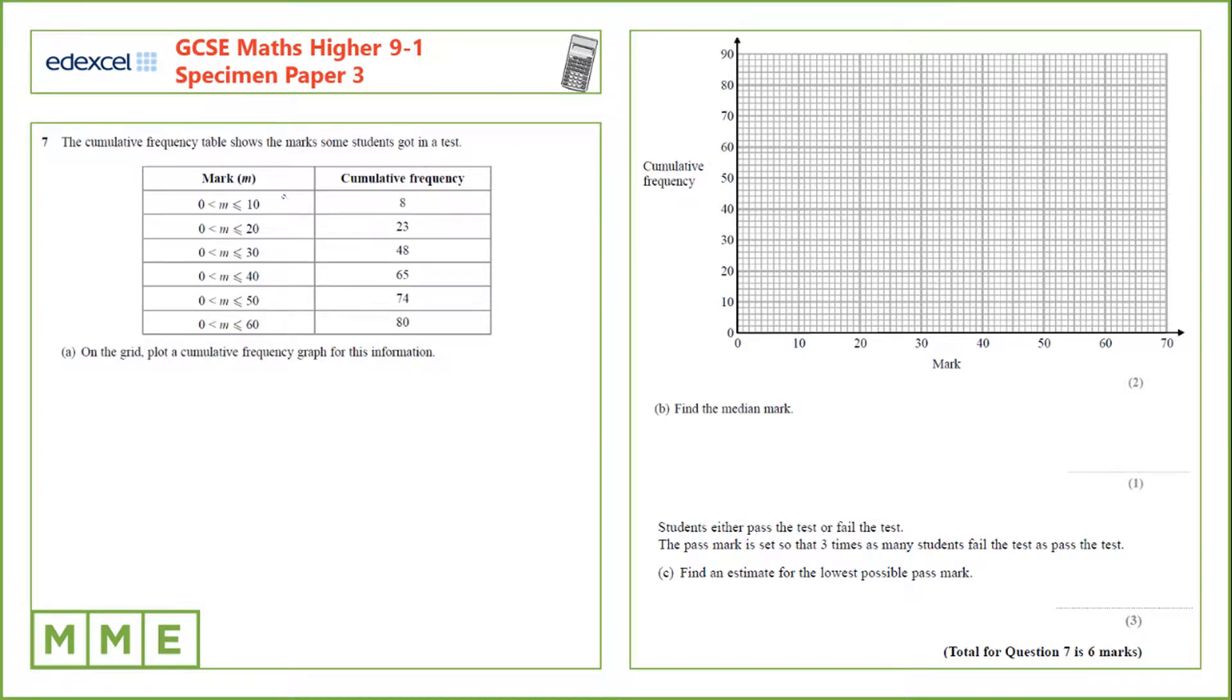And we're going to plot on the graph against the end of each group. So for instance the first point will be plotted at 10 and 8, so that's there.